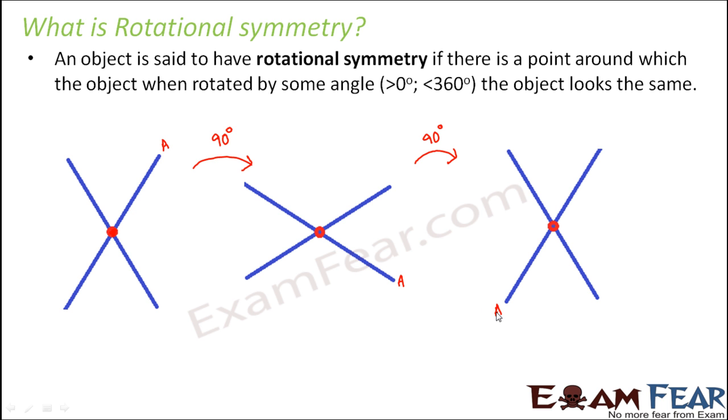Why are we marking point A? Just to show you that it has not actually come to its original position. The end which was here is now here. But in such an image, all the ends are identical.